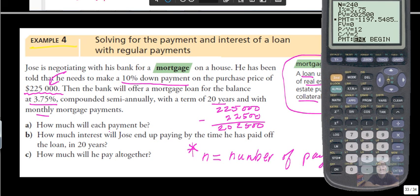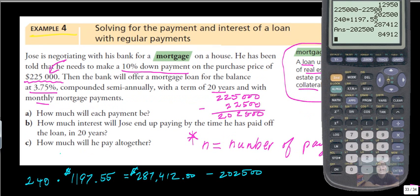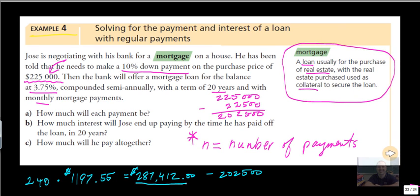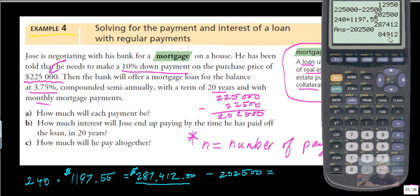How much interest will Jose end up paying by the time he's paid off the loan? What you do is you take 240 payments, and you multiply it by the payment. And you subtract the original amount, and that's the interest. Say that again. 240 payments times the payment minus the original loan amount here, and you get the interest. All right. So, 240 payments of $1,197.55 each gives us a grand total of $287,412. If you take away the original loan amount, then you get $84,912, and that is the interest paid. So, the answer for B, $84,912. Yeah, almost $85,000. That's what happens. You've got to pay a little extra to get that money.